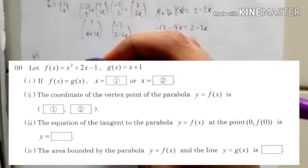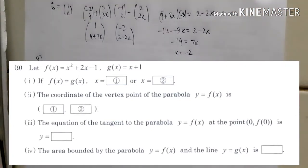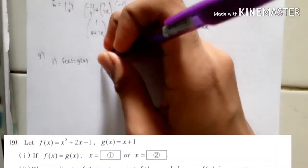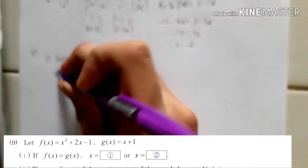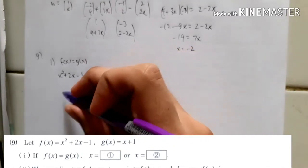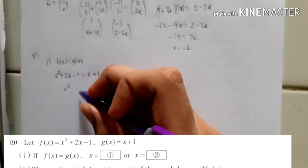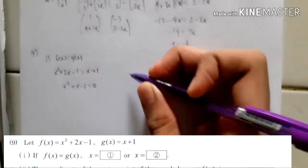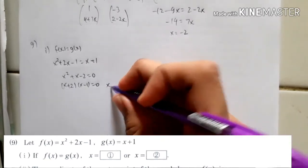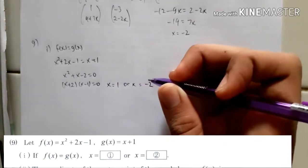Number 9: let f(x) = x squared plus 2x minus 1, and let g(x) = x plus 1. For part 1, if f(x) equals g(x), what is x? That is x squared plus 2x minus 1 equals x plus 1. Moving terms around gives x squared plus x minus 2, which we can factorize. So x equals 1 or x equals minus 2.